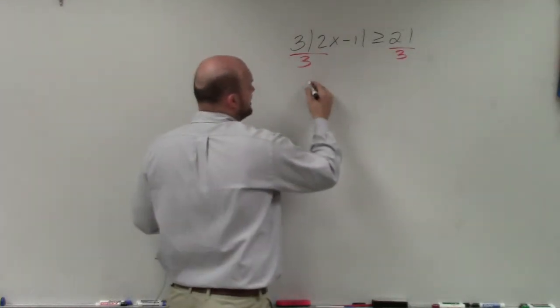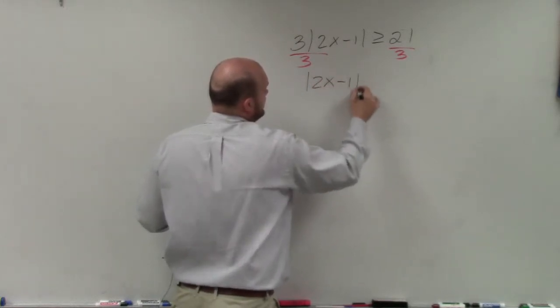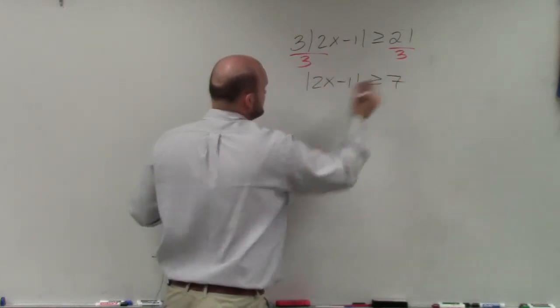So now, by dividing by 3, I'm left with 2x minus 1 is greater than or equal to 7.